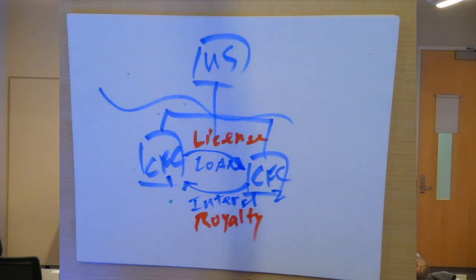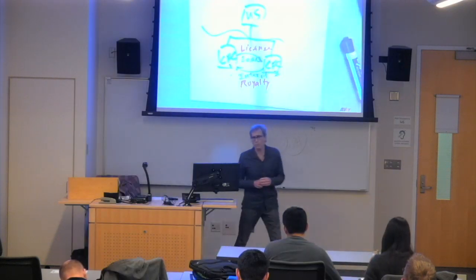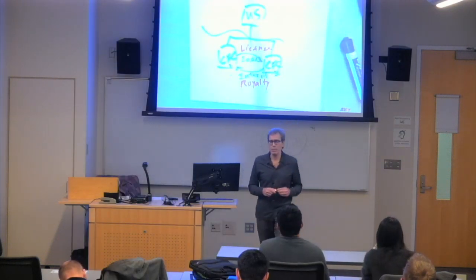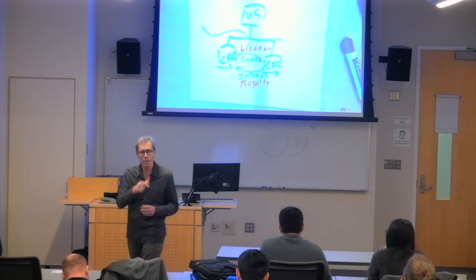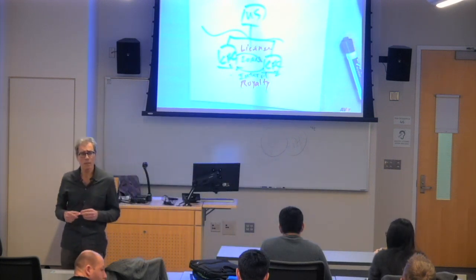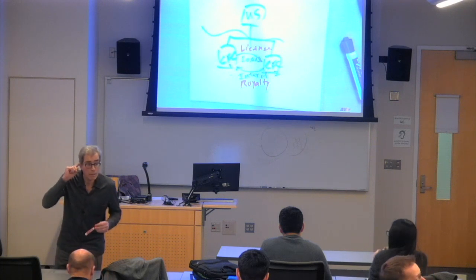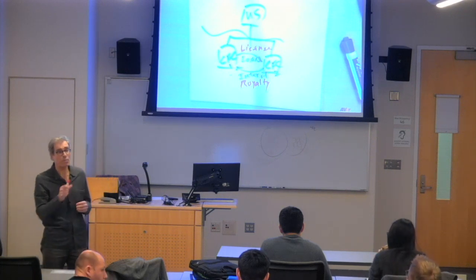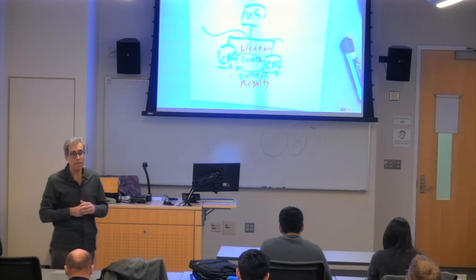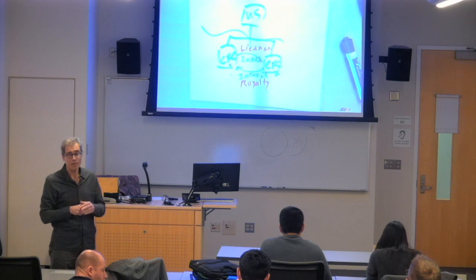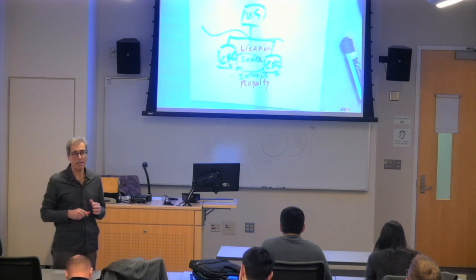So the point is that interest, royalty, rental, what does that sound like? Anybody remember the categories of subpart F income? Yes, Jen? Passive income? Passive, well, what's the term for it that we see? It's the first one. Foreign personal holding company income.